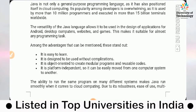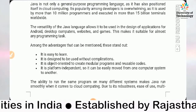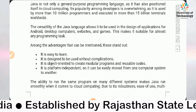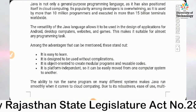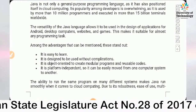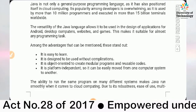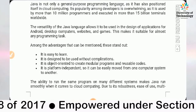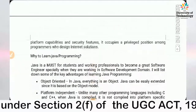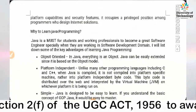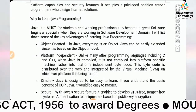Java is an object-oriented programming language. Its OOP concepts include: class, object, data abstraction, encapsulation, inheritance, polymorphism, dynamic binding, and message communication.